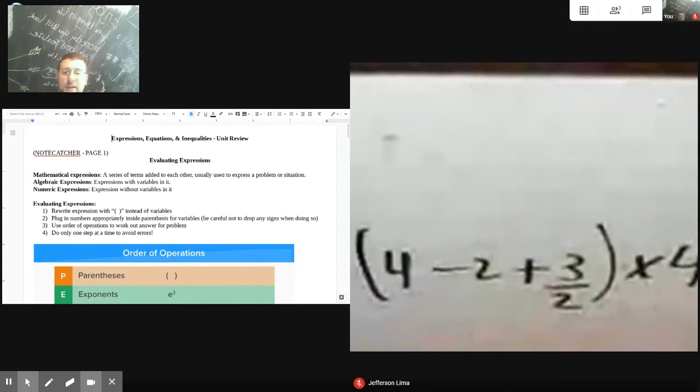Now the difference between an algebraic expression and a numeric expression is that algebraic expressions have variables in them. Now remember, variables is just another word for a letter that could be any number.